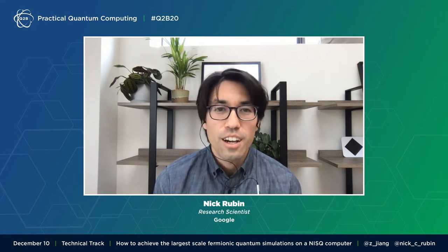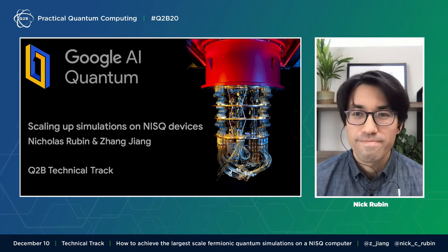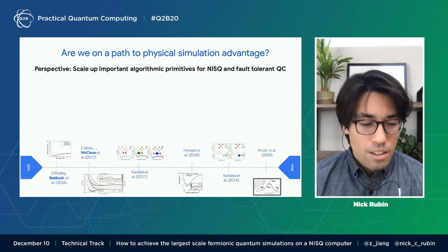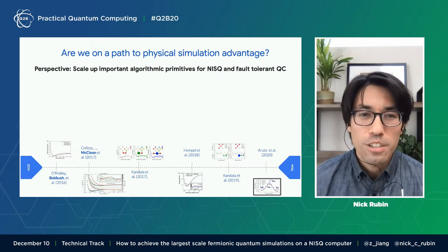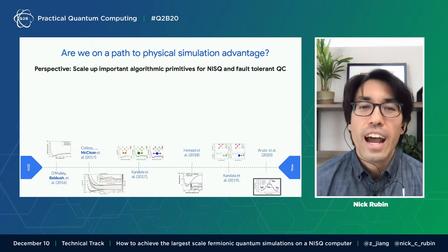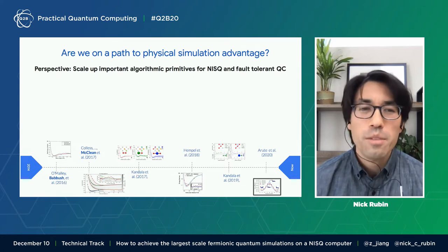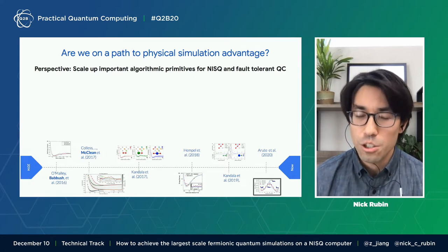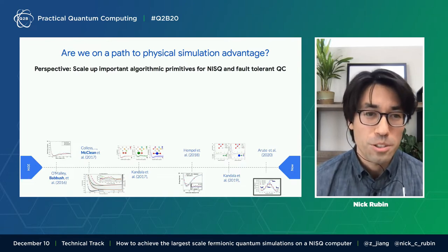We'll be covering some learnings we've had while using the Sycamore Quantum Processor in our recent experiments. So let's get started. One of the questions that guides our research is, are we on a path to physical simulation advantage? And what I mean by this is, are we deriving useful computational work from near-term quantum resources?